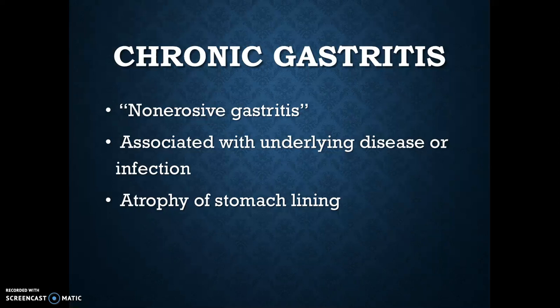Also, because the cells that secrete intrinsic factor are destroyed, the lack of intrinsic factor causes the stomach not to absorb B12, leading to pernicious anemia. Other conditions associated with chronic gastritis are lymphocytic and collagenous gastroenteropathies and chronic inflammatory conditions like Crohn's disease. During chronic gastritis, there is infection of the gastric mucosa, attraction of neutrophils and release of oxygen radicals, leading to further cell damage. There is also lymphocyte attraction which can, on rare occasions, cause lymphoid follicles. All of these events precipitate the destruction of the stomach's mucosal lining and secretory cells, leading to discomfort and other symptoms.